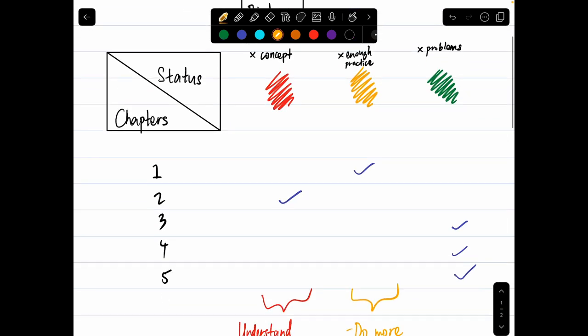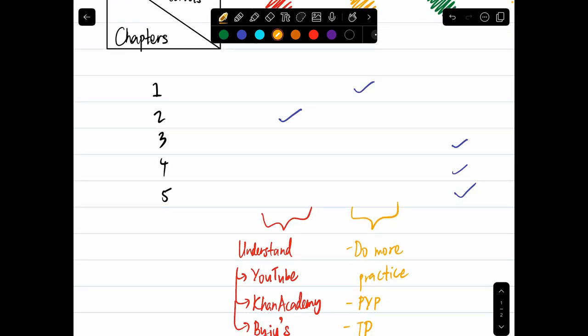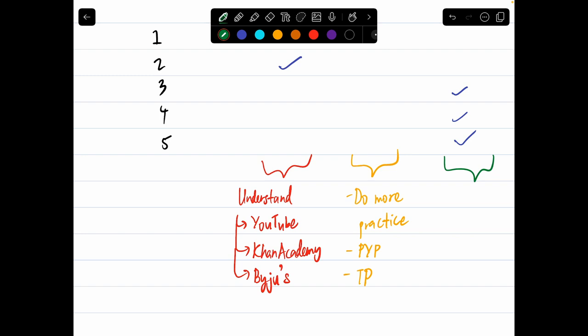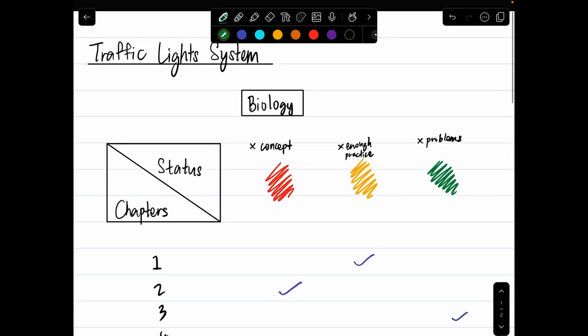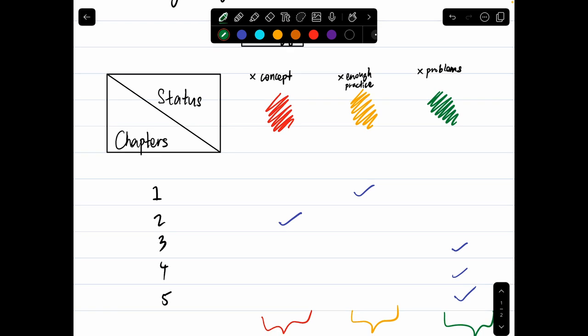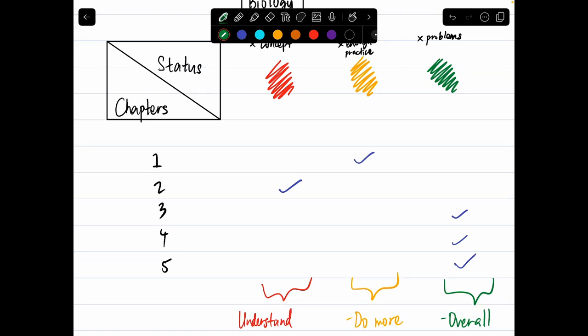And for the green one, for the chapters in the green category, you don't have to worry much because all you need is a bit of polishing and these chapters will be covered when you do your overall revision. There is not much you can do for the chapters in the green category because you already have a good understanding and you have done a lot of practice, so it's completely fine.